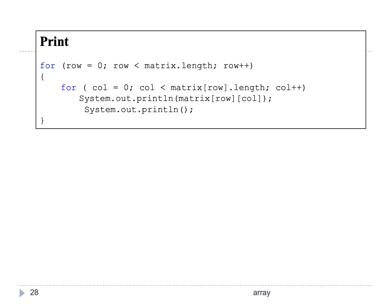To print all elements in a two-dimensional array, we go through each row and then all the columns within the row using a nested for loop — the inner for loop accesses the columns and the outer for loop handles the rows. You can also do it the other way around, where the outer for loop is for columns and the inner for loop is for rows. Try it out yourself.